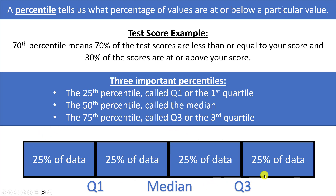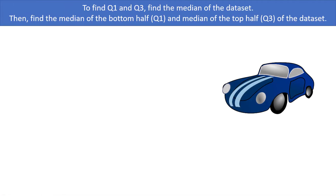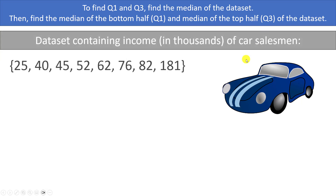To find the first and third quartiles of a data set, first find the median of the data set. Then find the median of the bottom half of your data set, which will be Q1, and the median of the top half of your data set, which will be Q3.